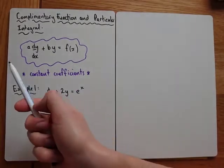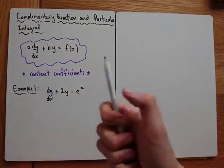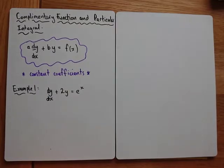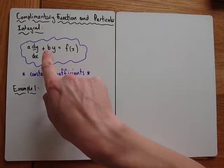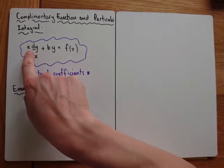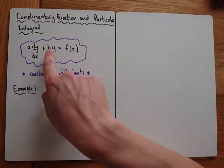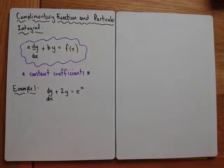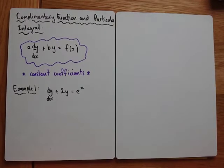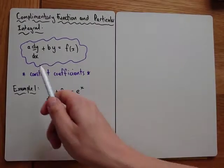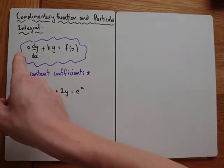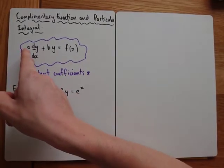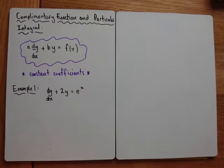Now the first thing to realise is that the form for our differential equation is a little bit different. It looks like you could actually do the integrating factor if you wanted to on these questions, because you've got dy by dx, some stuff times by y, and a function of x on the right-hand side. But specifically this will only work for constant coefficients on the left-hand side. We don't need the coefficient for dy by dx to be equal to 1 — it could be different, as long as it's a constant.